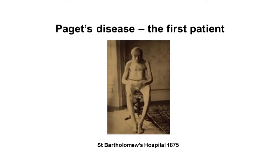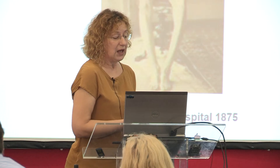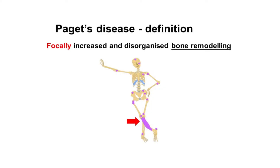This is the first patient, photographed from 1875, and interestingly this description has withstood the test of time. However, nowadays we know that actually Paget's disease is due to focally increased and disorganised bone turnover or bone remodelling. For reasons we don't completely understand, in Paget's disease this remodelling process gets out of control.